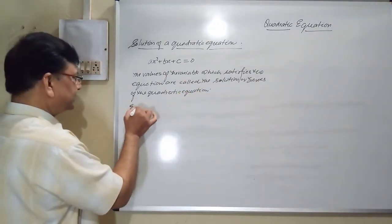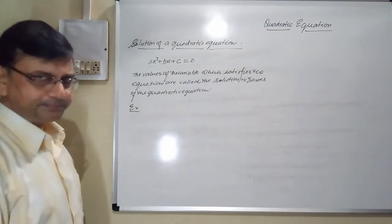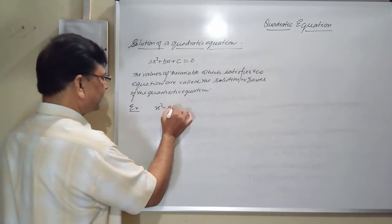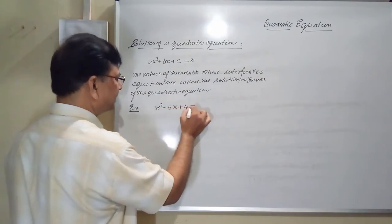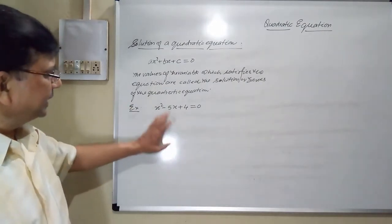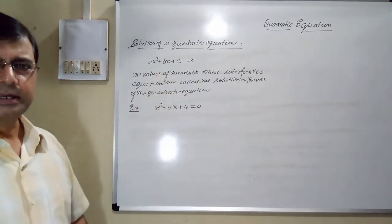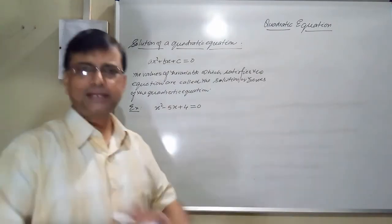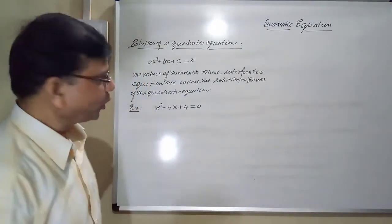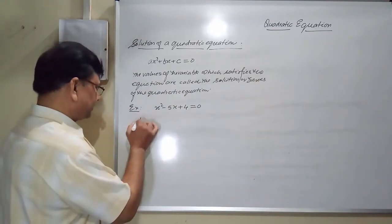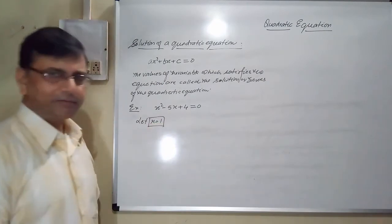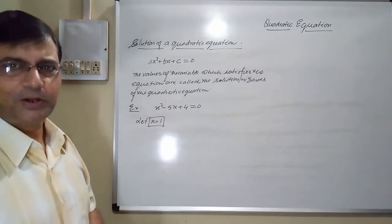With an example things will be more clear. I will take one example. Suppose x² − 5x + 4 = 0. This is a quadratic equation because the degree is 2. For different values of x, I will see whether this equation is getting satisfied or not. First, let x = 1.